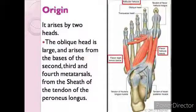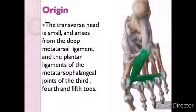The origin of adductor hallucis: the oblique head is large and arises from the bases of the second, third, and fourth metatarsals and from the sheath of the tendon of the peroneus longus. The transverse head is small.